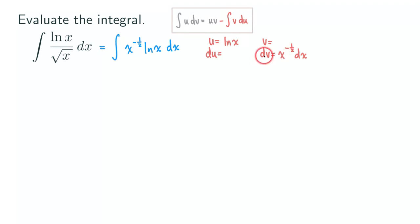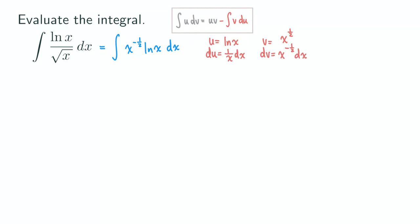Now we can differentiate ln(x), which gives us 1 over x dx. You can also write that as x to the minus 1, but it's my habit to write it as 1 over x. We want to find the antiderivative of x to the negative 1/2. Using the power rule, we add 1 to the exponent, giving x to the 1/2. Don't forget to multiply by the reciprocal of the new exponent — the reciprocal of 1/2 is 2 — so v equals 2x to the 1/2. Now we're ready to apply the integration by parts formula.